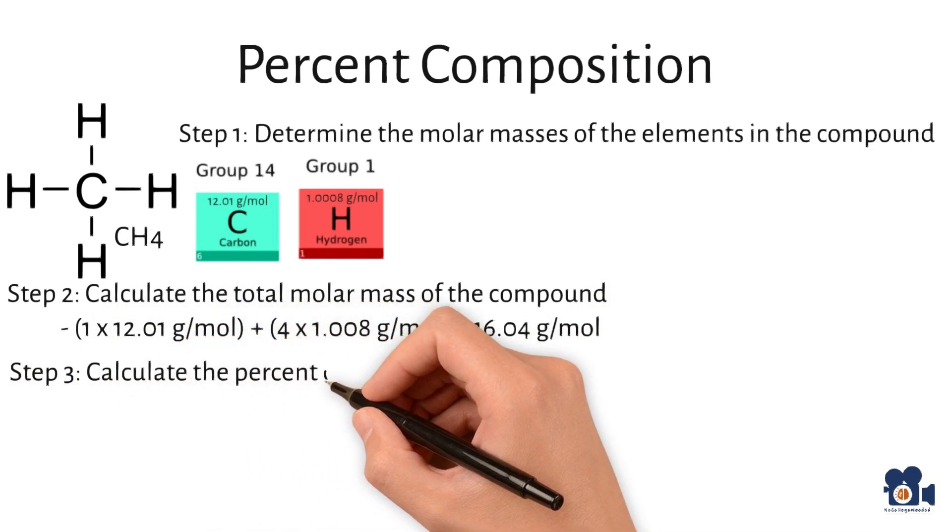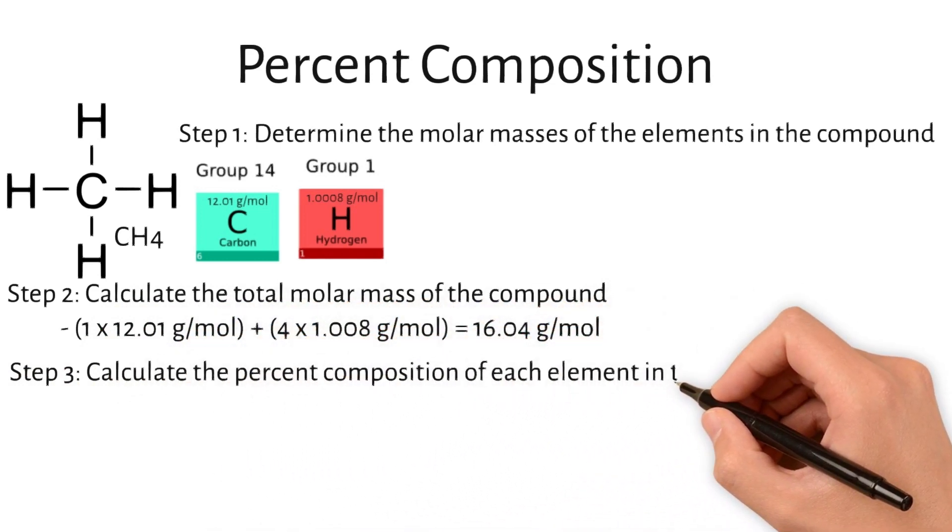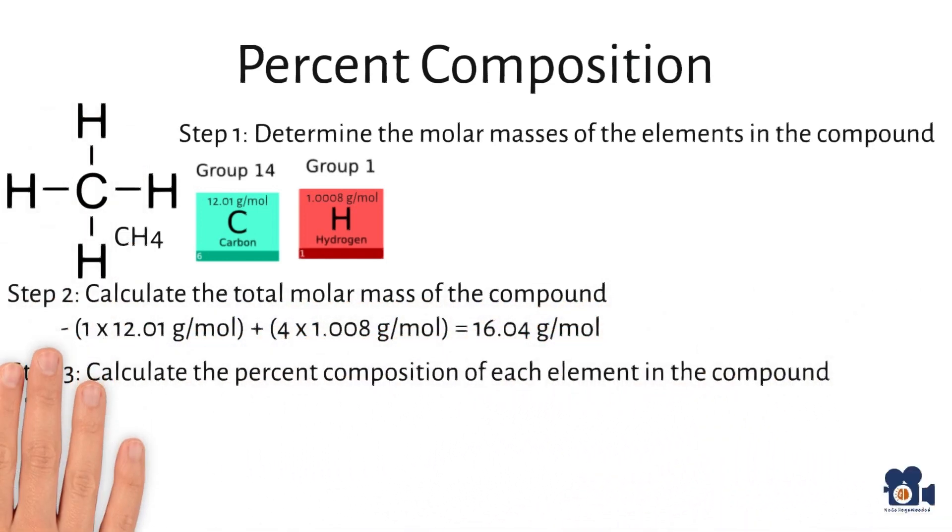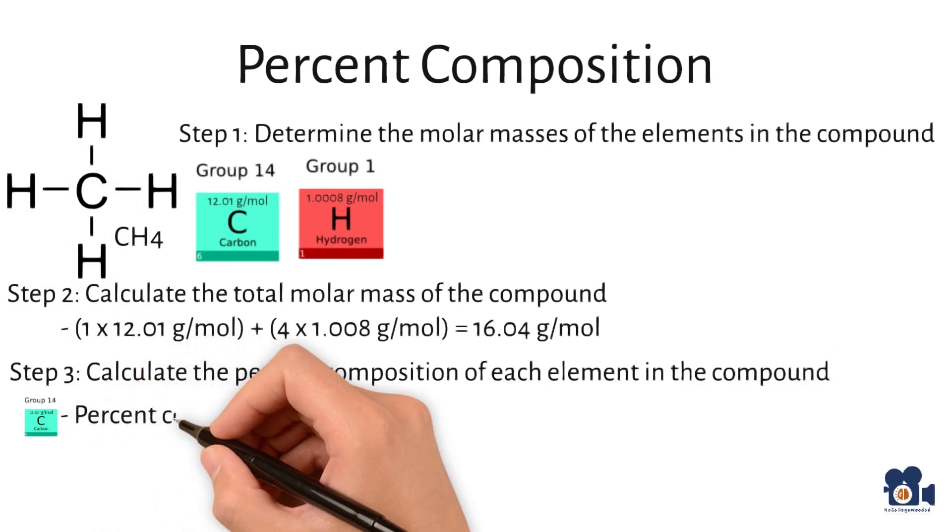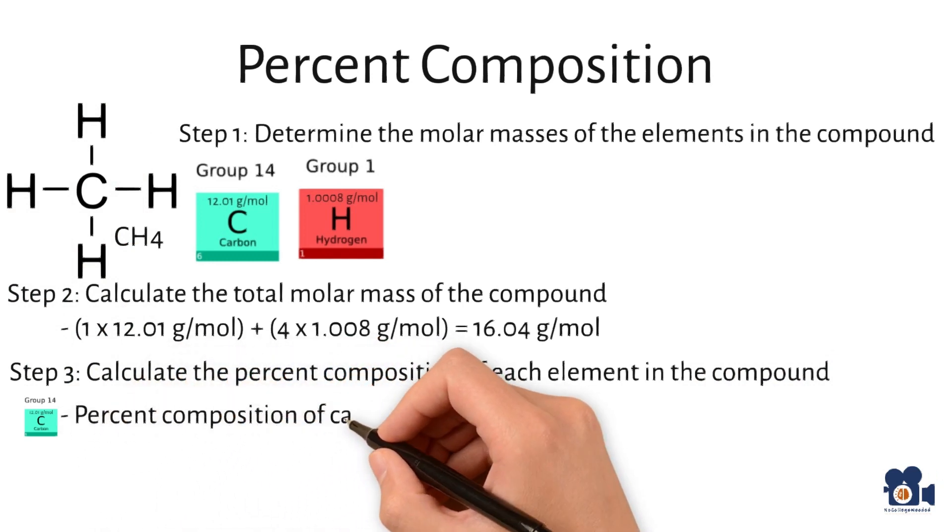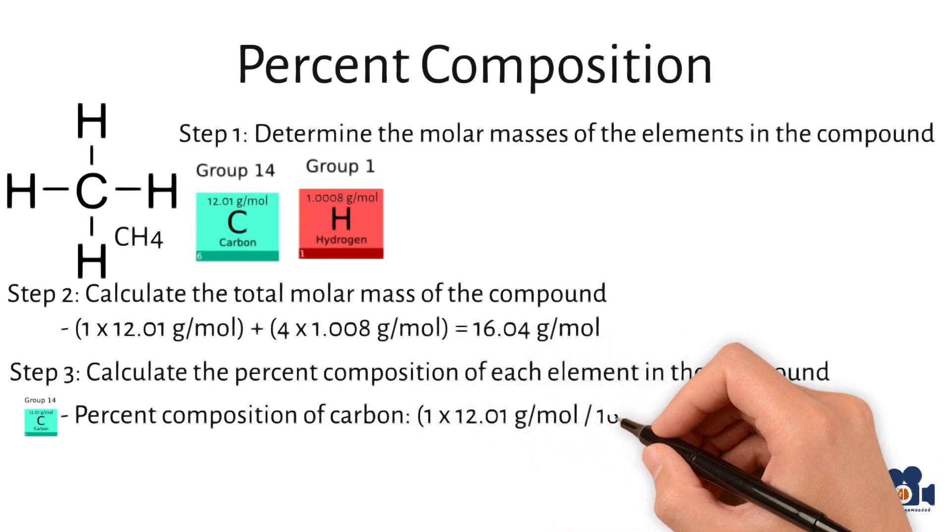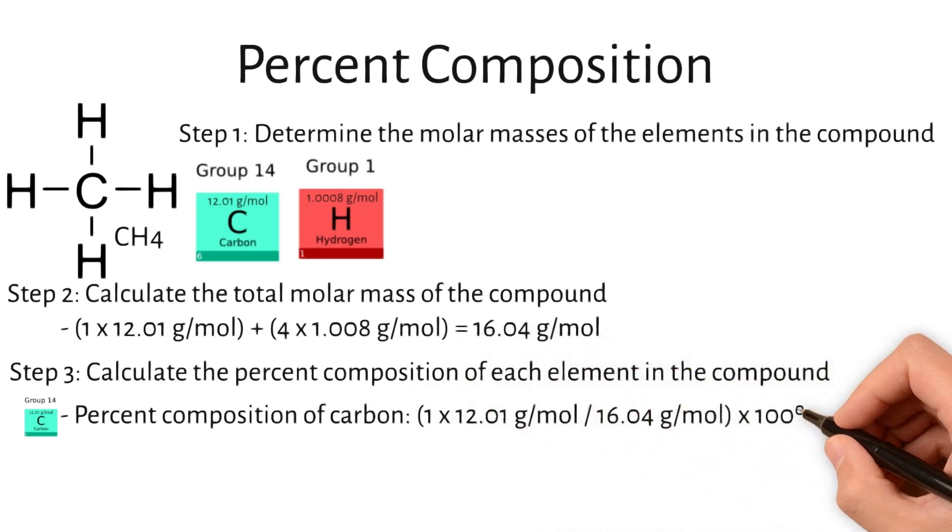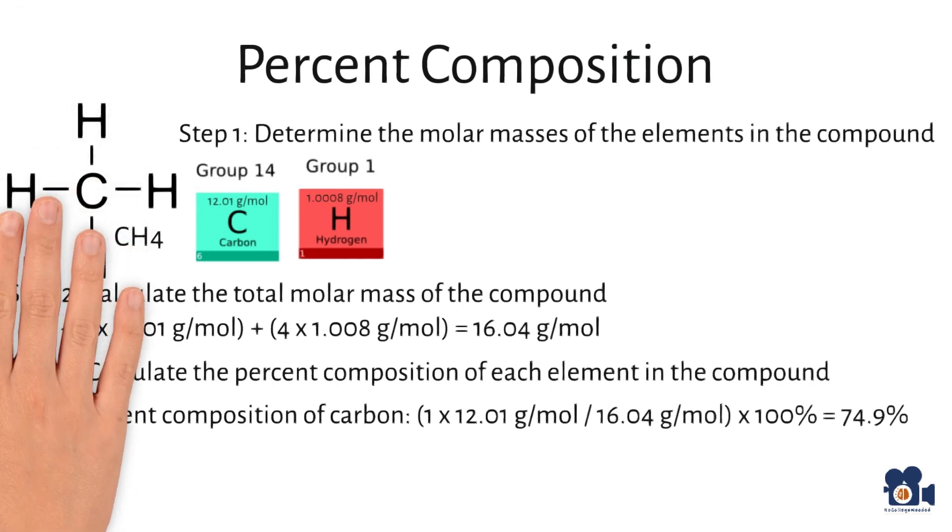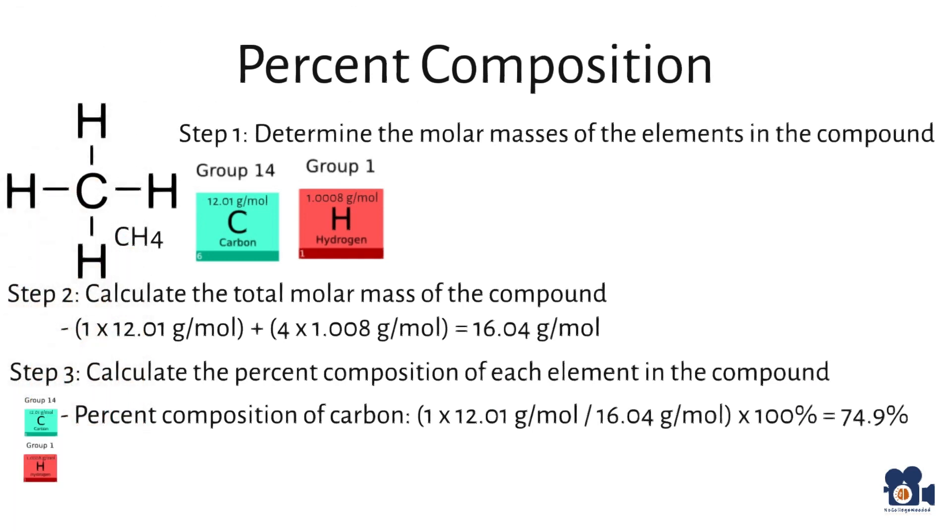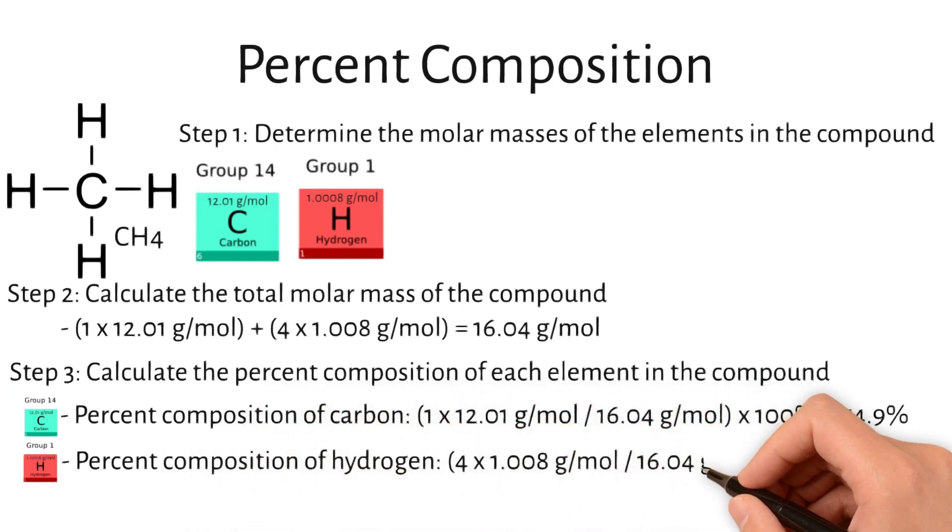Step 3, calculate the percent composition of each element in the compound. The percent composition of carbon is 1 times 12.01 grams per mole divided by 16.04 times 100% to get 74.9%. The percent composition of hydrogen is 4 times 1.008 grams per mole divided by 16.04 grams per mole times 100% to get 25.1% composition for hydrogen.